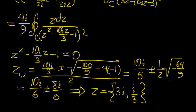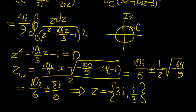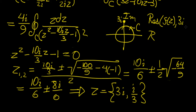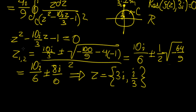We now test whether these roots lie within the unit circle. The root z = 3i has magnitude 3, so it lies outside the circle, and by the residue theorem its contribution is zero. The root z = i/3 has magnitude 1/3, so it lies inside the unit circle. The only residue we need to calculate is the one at z = i/3.